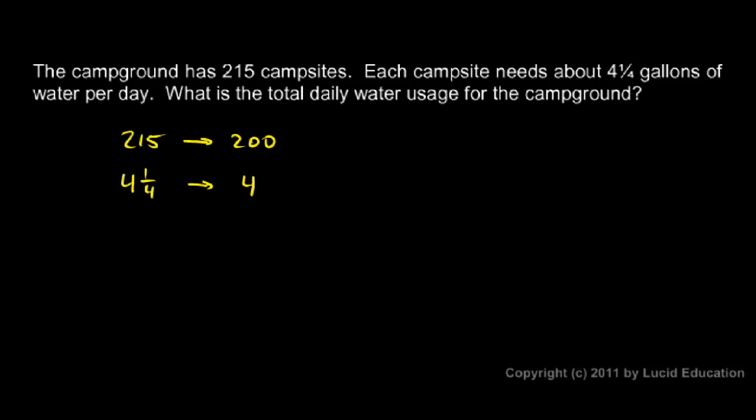And instead of multiplying 215 by 4.25, we can just do 200 times 4, which is very easy to do. You can probably do that in your head. 800. We need about 800 gallons a day of water for this campground.